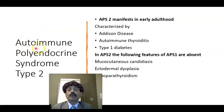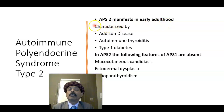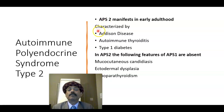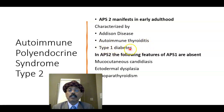Now I will go to type 2 — autoimmune polyendocrine syndrome type 2. It is manifested in early adulthood, whereas APS1 usually manifests in the second decade, maybe at the end of the first decade. APS2 is characterized by Addison's disease, autoimmune thyroiditis, and type 1 diabetes.